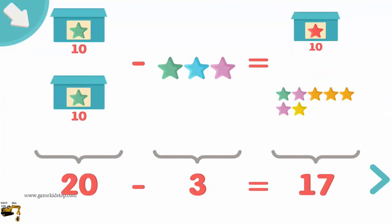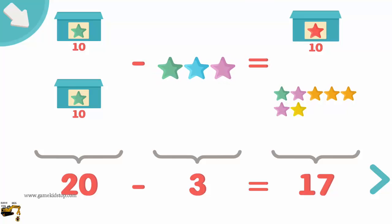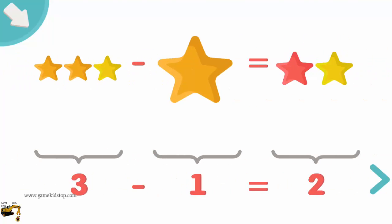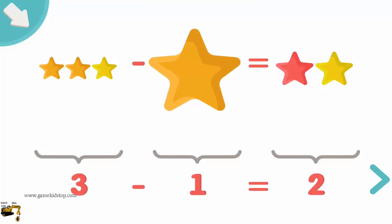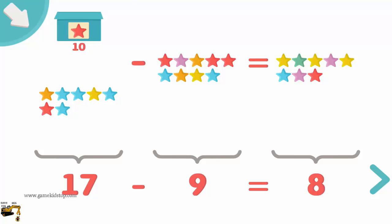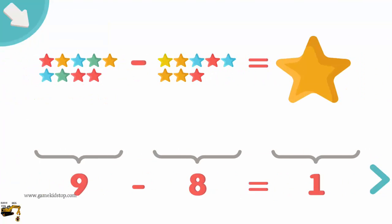20 minus 3 equals 17. 2 minus 0 equals 2. 3 minus 1 equals 2. 17 minus 9 equals 8. 9 minus 8 equals 1.